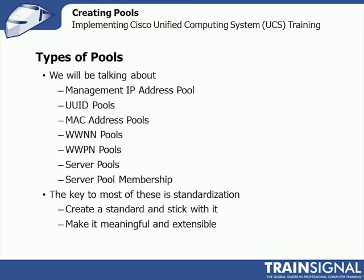We're going to talk about several types of pools: management IP address, UUID, MAC address, WWNN, WWPN, server pools, and server pool membership — which talks about how we assign blades to pools. The key to most of these is standardization. Create a standard and stick with it. Make it meaningful and extensible — don't put yourself in a corner where you have to redo your naming structure because you never thought you'd need more than 128 MAC addresses, especially now with VMware and virtual interface cards like the VIC-1280 blowing through that number.